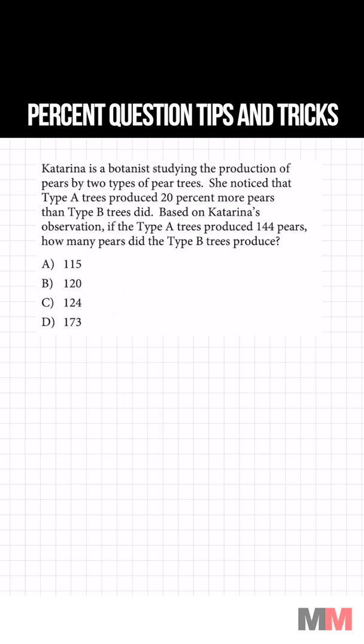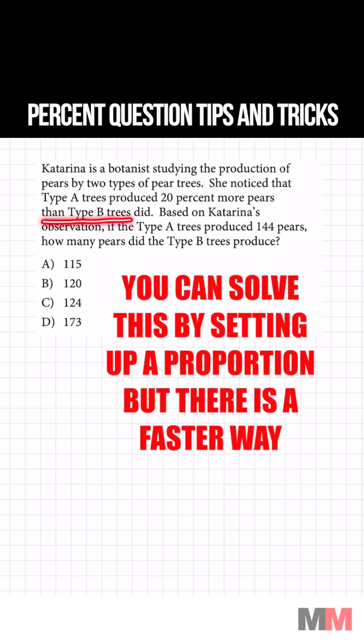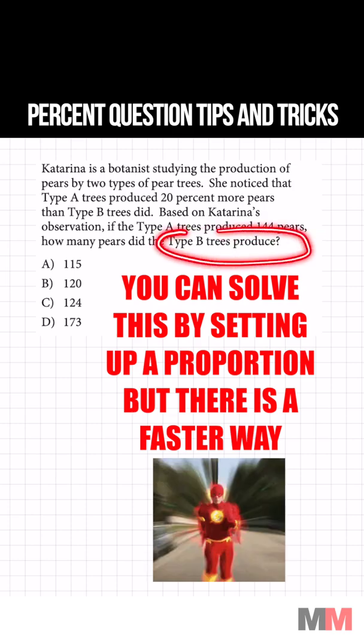Type A trees produced 20% more pairs than type B trees did. If the type A trees produced 144 pairs, how many pairs did type B trees produce?